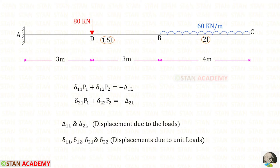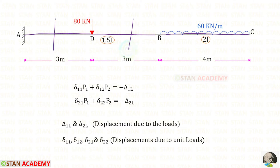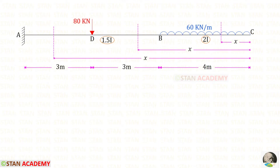To find these deflections we are going to use the unit load method. In the unit load method we have to make sections. In this beam there are 3 different parts: AD, DB, and BC, so we have to make 3 sections — one in AD, one in DB, and one in BC. I have made all sections at a distance of X from C.